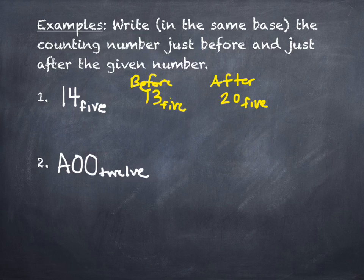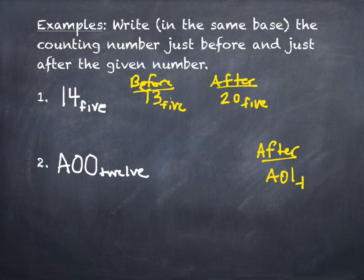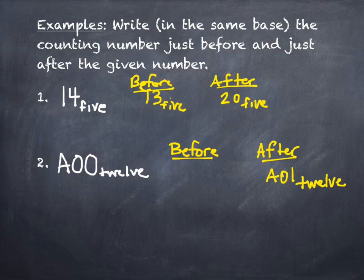Let's do a more challenging one: A00 in base 12. Which is easier — the before number or the after number? The after number. What is the number after A00? A01 — that's right. Now the number before A00 takes a little more work. The answer is 9BB, but let's figure out how we got there.